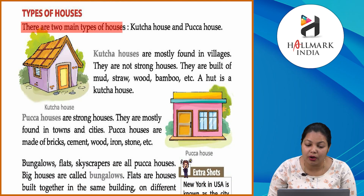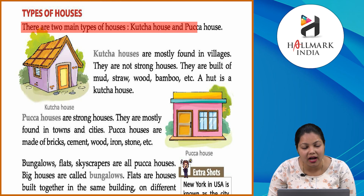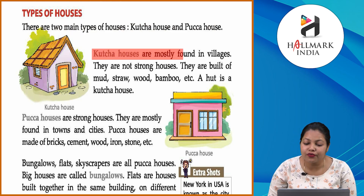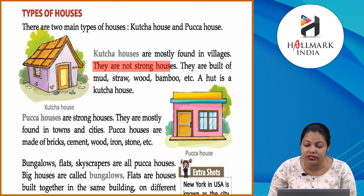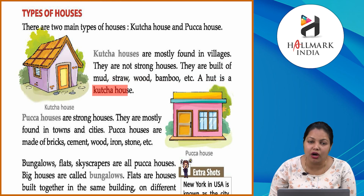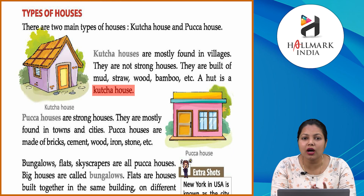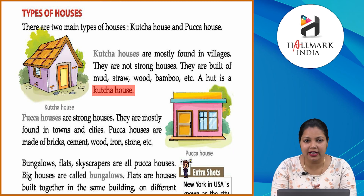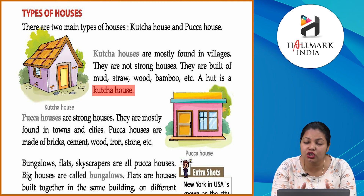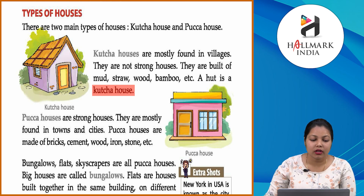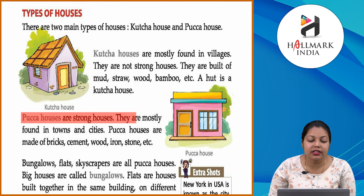There are two main types of houses: kaccha house and pakka house. Kaccha houses are mostly found in villages; they are not strong houses. They are built of mud, straw, wood, bamboo, etc. A hut is a kaccha house. Kaccha houses villages पर पाए जाते हैं और ये strong houses नहीं होते — ये easily available materials से बनते हैं।